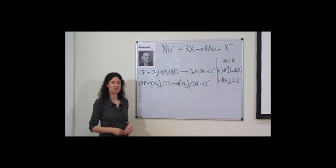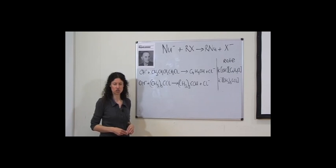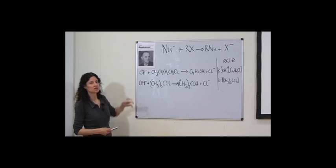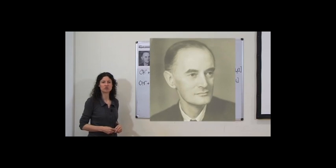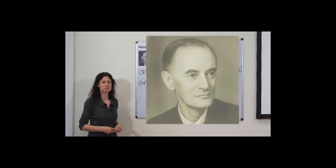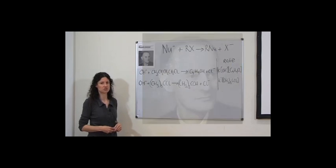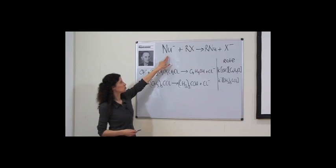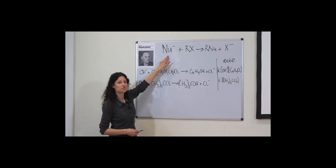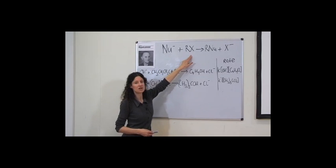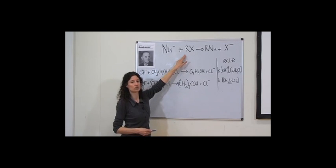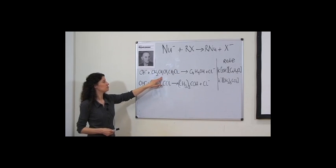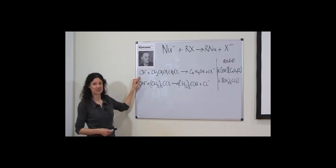A classic example of this is the nucleophilic substitution reaction, which was investigated by Professor Ingold — a professor of organic chemistry here at the University between 1924 and 1930. A nucleophilic substitution involves exchange of a nucleophile with a free pair of electrons and a leaving group X attached to an alkyl group R. A nice example of this is the reaction of n-butyl chloride with hydroxide ions.